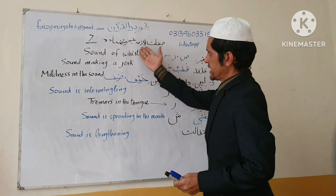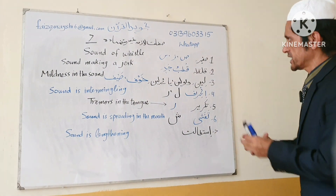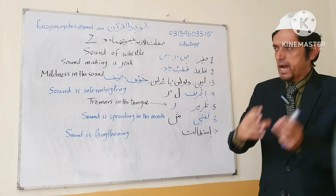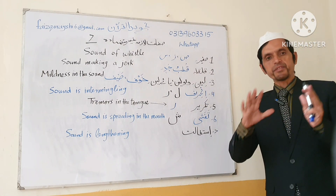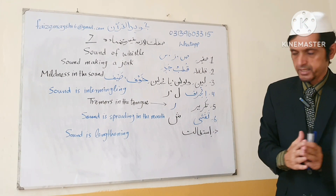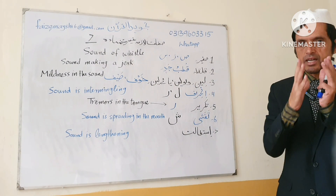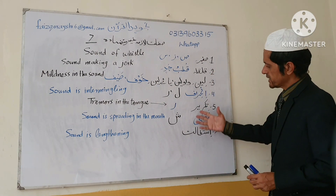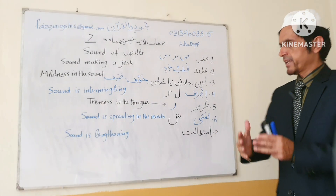In this class I am going to teach you Sifati Lazma Gair Mutabada. These are characteristics of some letters which are called Gair Mutabada — it means they are not opposite of each other. As I have already taught, we have ten Mutabada characteristics which are opposite of each other. But these are seven characteristics which are not opposite — they can be found only in specific letters.